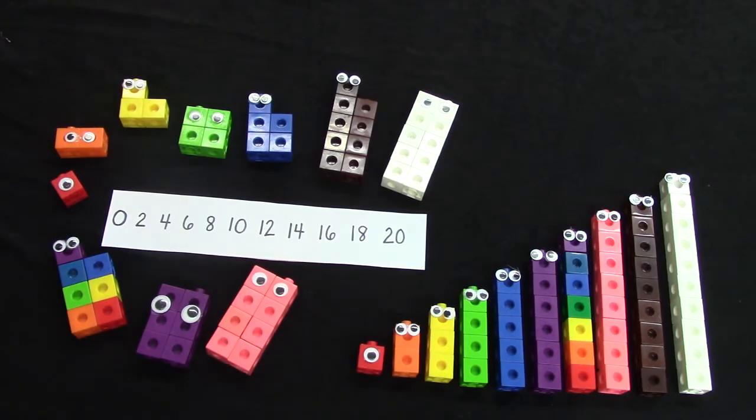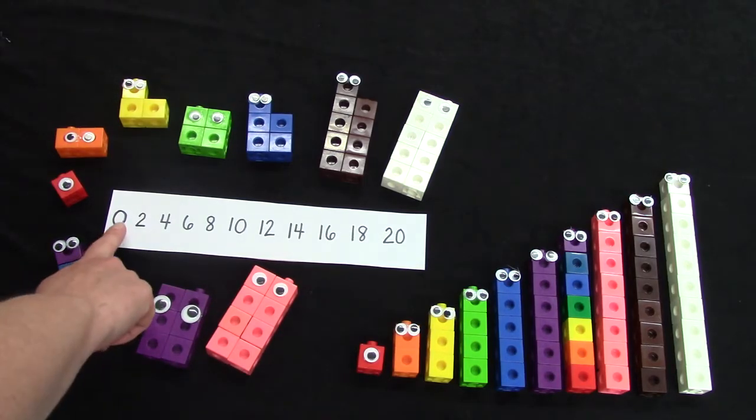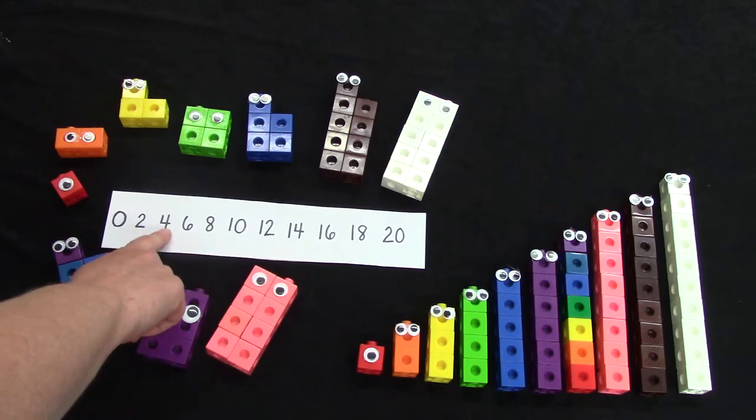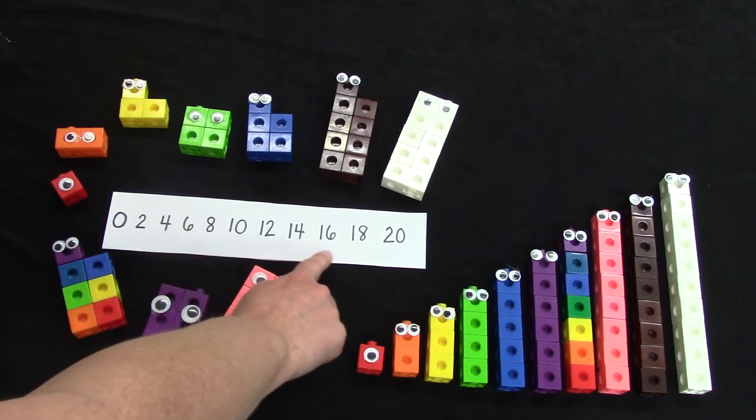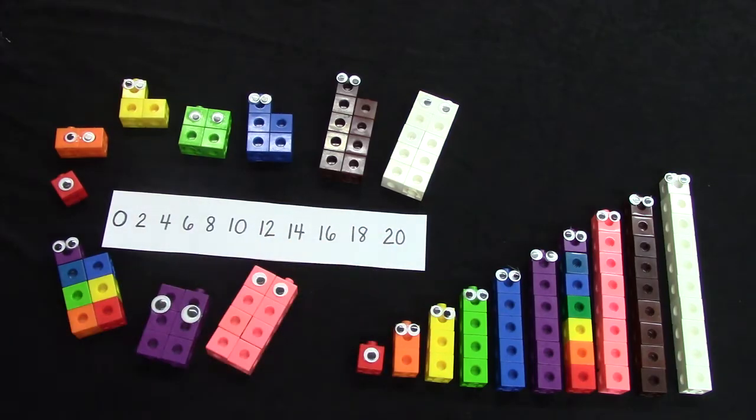Let's take a look at this number line. It says 0, 2, 4, 6, 8, 10, 12, 14, 16, 18, 20. Well those aren't our usual counting numbers. Those are skip counting. I know a skip counting song for the number 2. It goes like this.